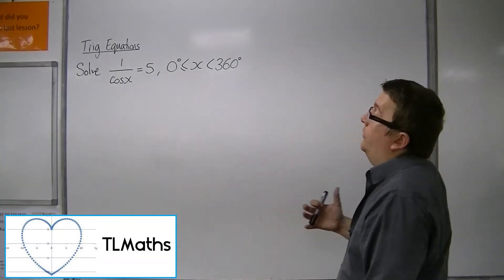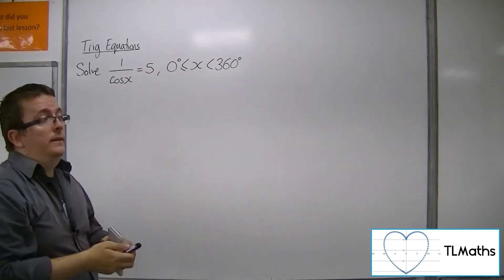Okay, so let's say I want to solve 1 over cos x equals 5 between 0 and 360 degrees. You can't solve that directly without rearranging it.